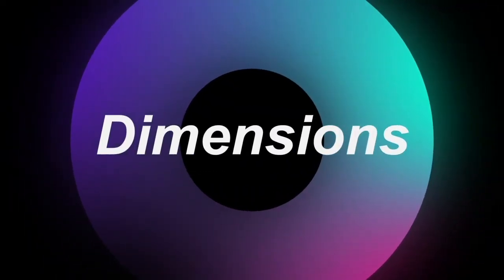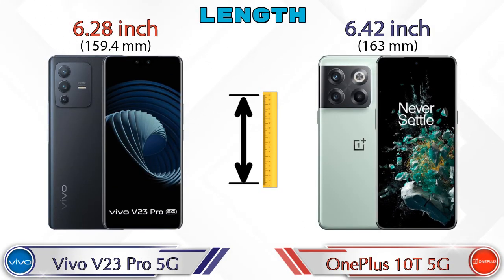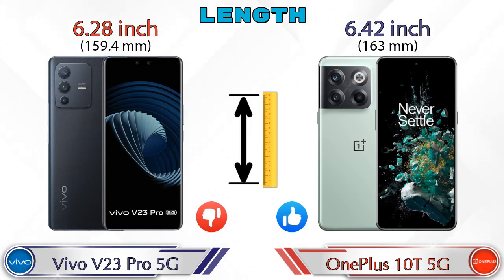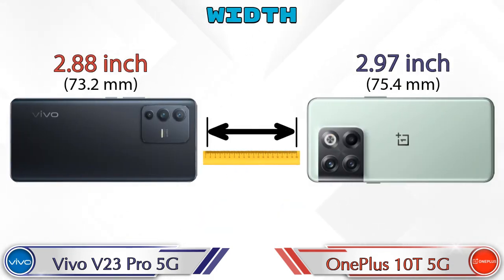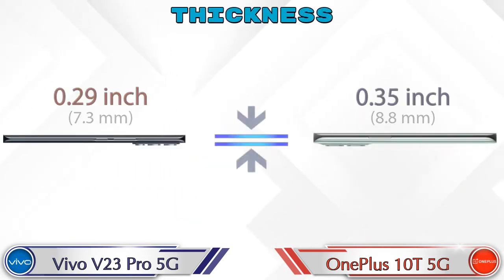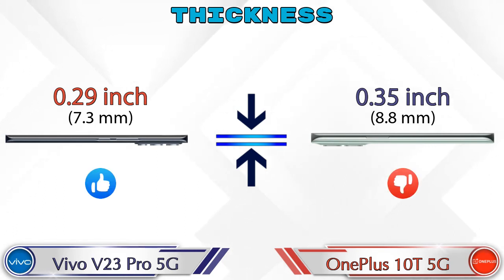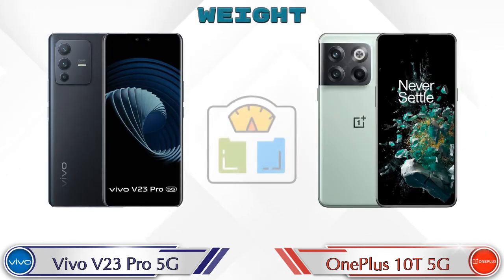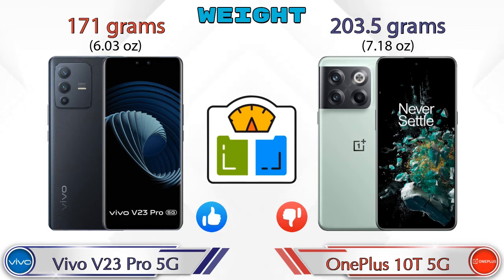Now let's check the dimensions. In terms of length, the Vivo V23 Pro 5G is 6.28 inches and the OnePlus 10T 5G is 6.42 inches. Width is 2.88 inches on the V23 Pro 5G and 2.97 inches on the 10T 5G. Thickness is 0.29 inches on the V23 Pro 5G and 0.35 inches on the 10T 5G. Weight is 171 grams for the V23 Pro 5G and 203.5 grams for the 10T 5G, making the 10T 5G heavier.